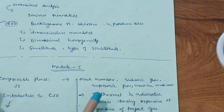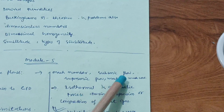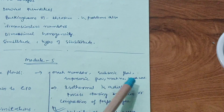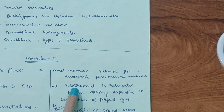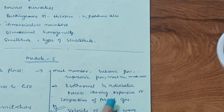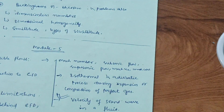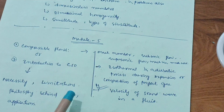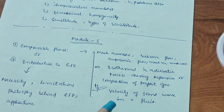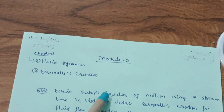In the first part of Module 5 — compressible flows — focus on Mach number, subsonic and supersonic flows, Mach angle, and Mach cone. Also cover isothermal and adiabatic processes during compression of a perfect gas, and derive the equation for velocity of a sound wave in a fluid. This content is enough to conquer at least 10 to 15 marks from Module 5.